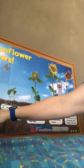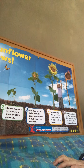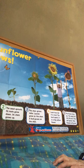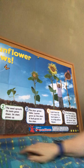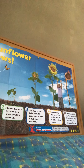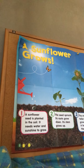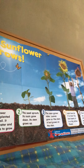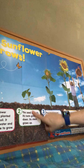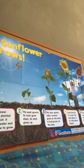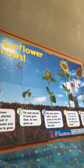In here it says a sunflower seed is planted in the dirt. It needs water and sunshine to grow. Here is where we see the sunflower seed going in. Next, the seed has roots, and then out pops the stem.